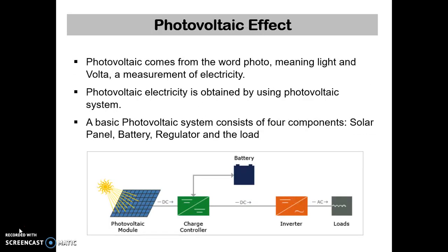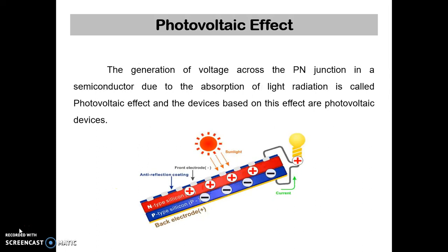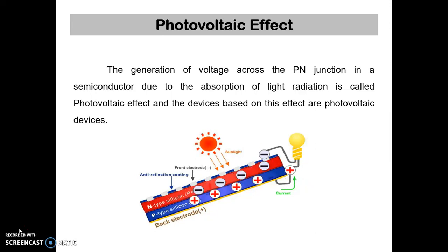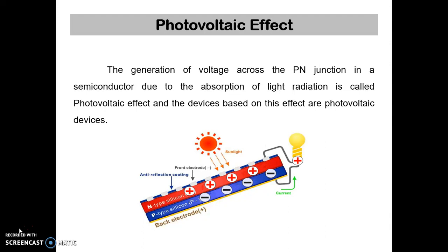What is the photovoltaic effect? It comes from the word 'photo', meaning light, and 'volta', a measurement of electricity. It is obtained by using a photovoltaic system, which consists of four components: solar panel, battery, regulator, and load. The photovoltaic effect is the generation of voltage across the p-n junction in a semiconductor due to the absorption of light radiation. Devices based on this effect are called photovoltaic devices.